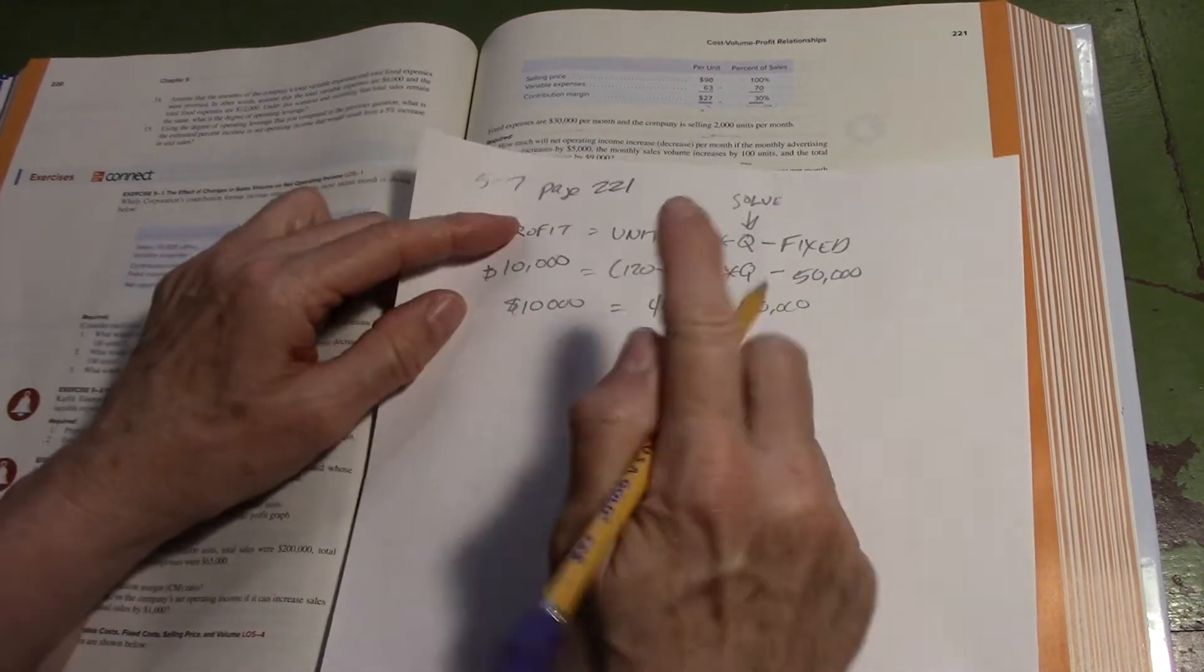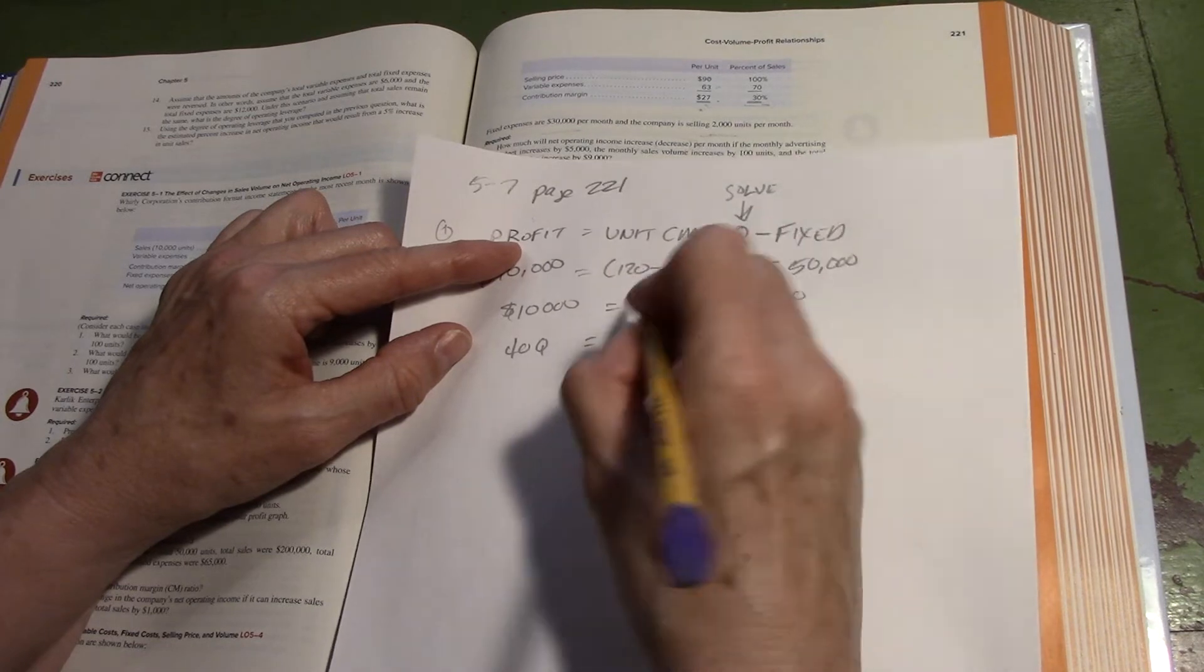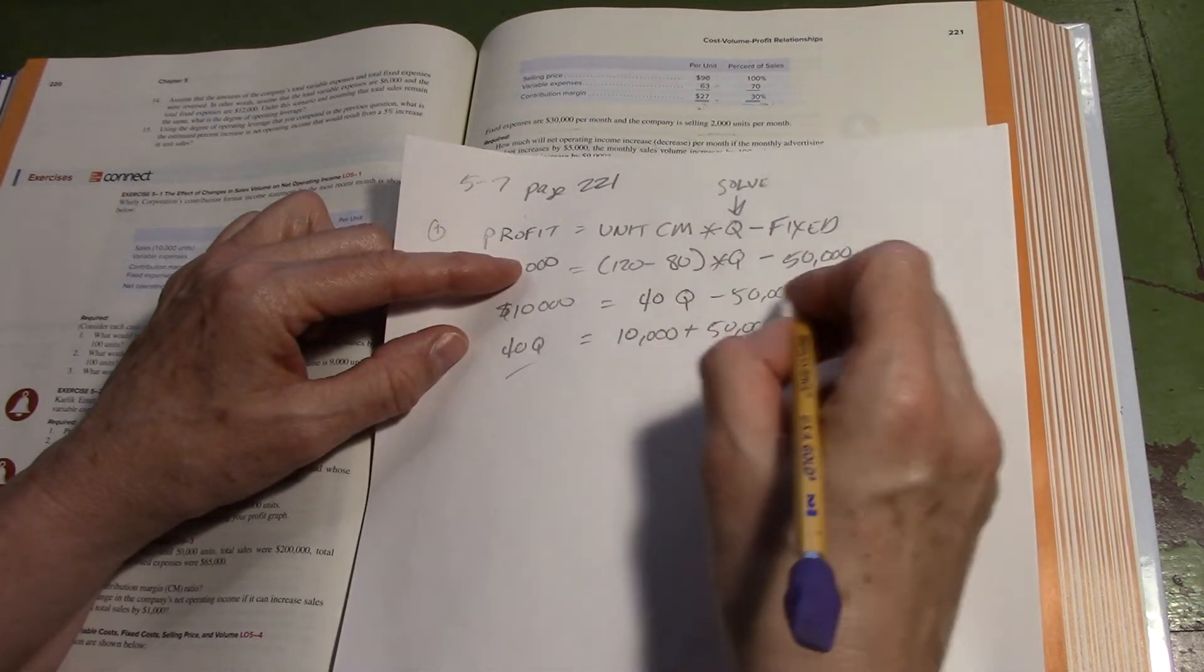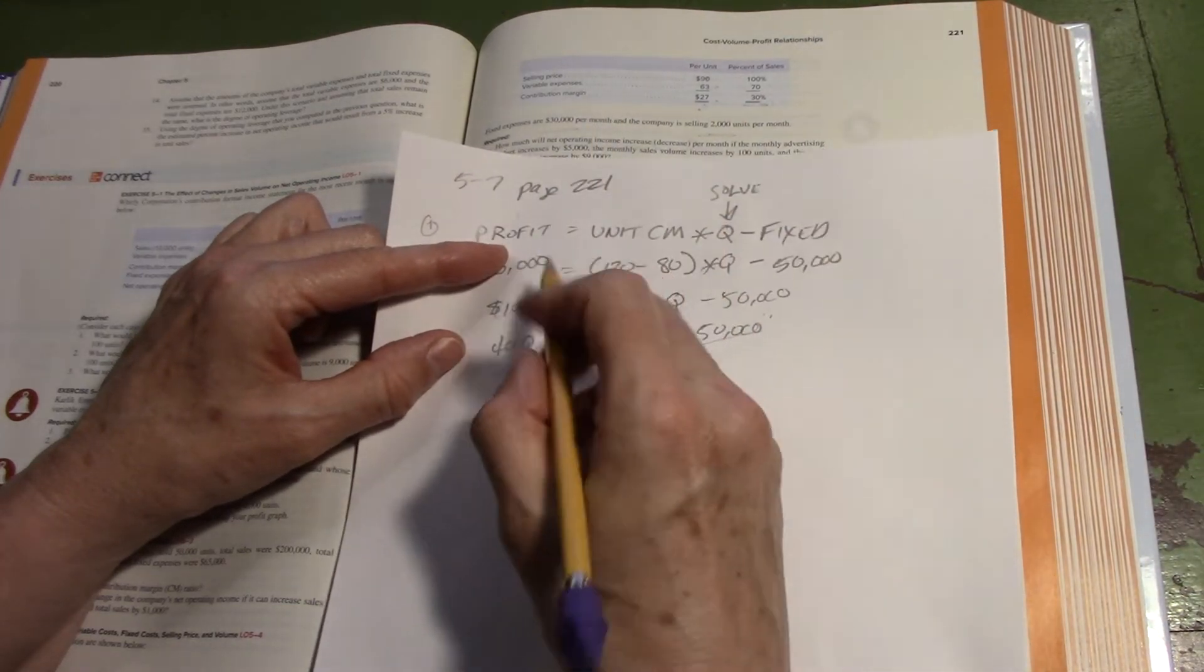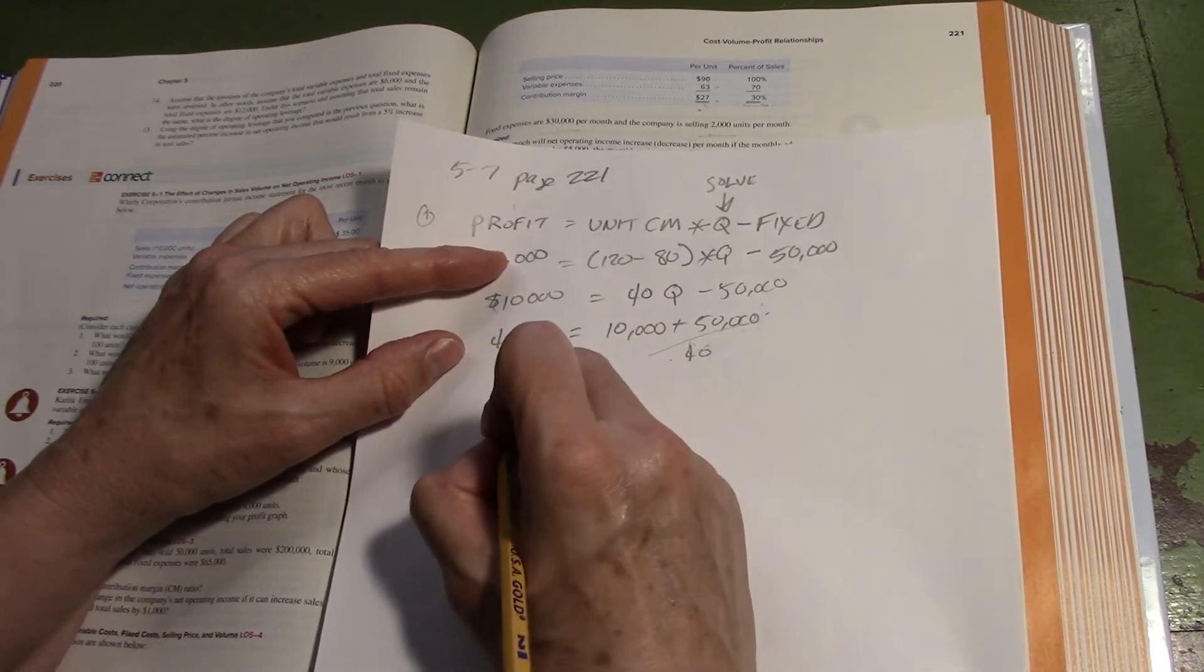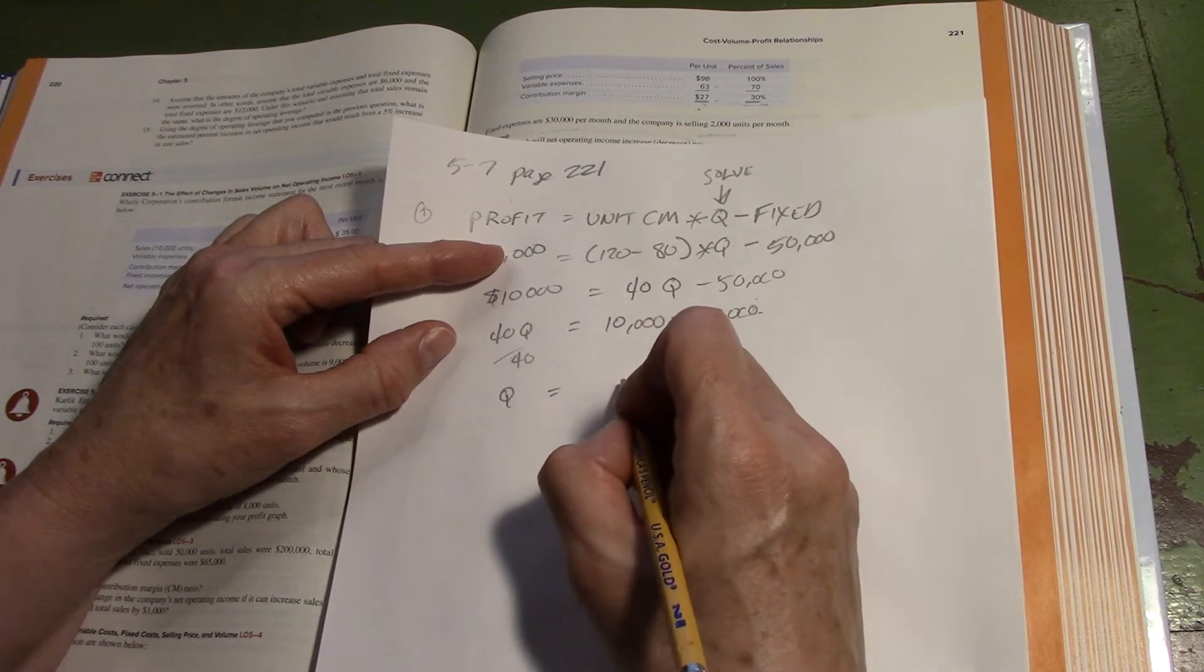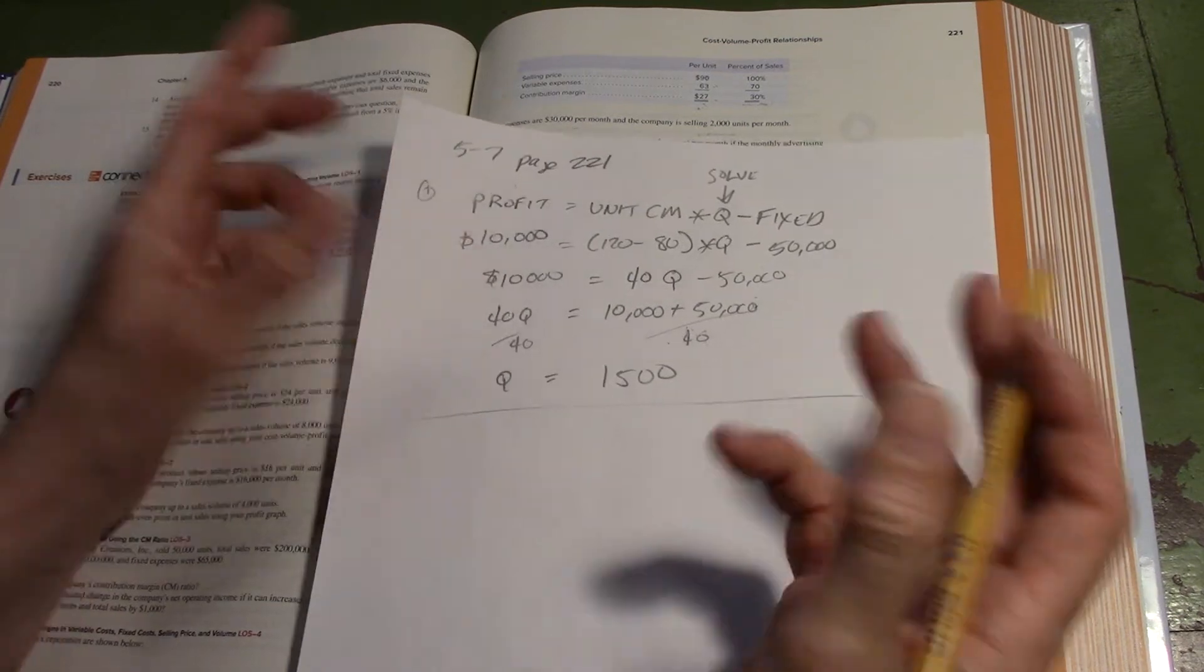40Q minus 50,000. We're going to add over here. We get 40Q equals 10,000 plus 50,000. Divide both sides by 40, and that leaves me with Q equals 60,000 divided by 40, which is 1,500.